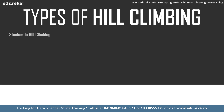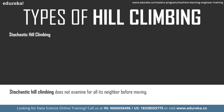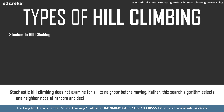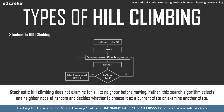Stochastic hill climbing does not examine all neighbors before moving. Instead, it randomly selects one neighbor node and decides whether to choose it as the current state or examine another. It does not search the entire graph for a better node — it picks points at random and decides if each is a better solution. To optimize this approach, take as many random possibilities as possible; it may take time but guarantees a better solution.